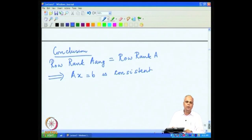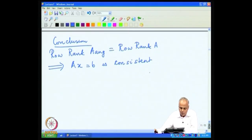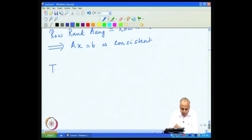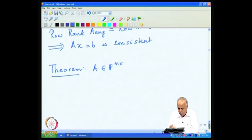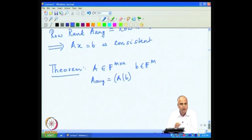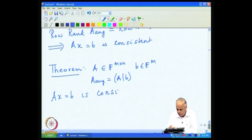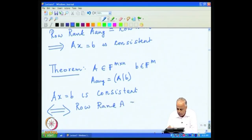Putting both conclusions together: Ax = B is consistent if and only if row rank(A) = row rank(A_aug). This is the theorem. This answers one of the fundamental questions raised in the first lecture: what is the criterion for the system Ax = B to have a solution? The answer is that the row rank of A must equal the row rank of A_aug.